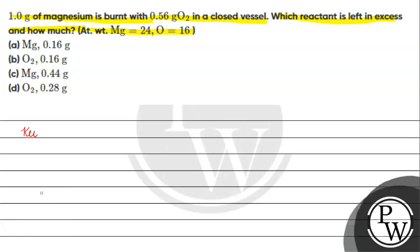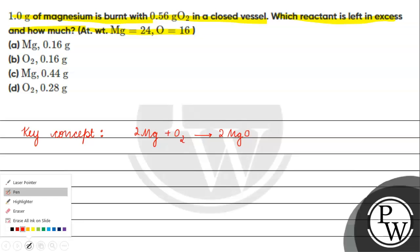The key concept for this question is, if we have magnesium and oxygen reaction, 2 mols of magnesium will react with 1 mol of oxygen to give us 2 mols of magnesium oxide.